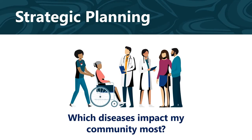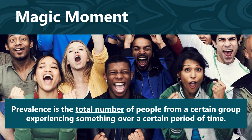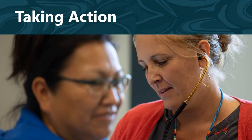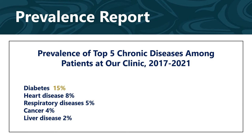Let's talk about an example that you might see in your work. Imagine that you want to write a strategic plan for your department. To create helpful priorities and goals and prioritize your funding and staff time, you want to know which diseases impact your community the most. You remember that prevalence is the total number of people experiencing something over a certain period of time, so you contact your clinic and request a report that includes the prevalence of the top five chronic diseases impacting tribal members who were patients over the past five years. The report indicates that, compared to other diseases, diabetes impacts the highest number of tribal patients.